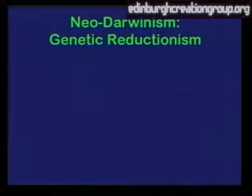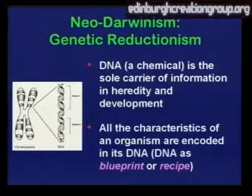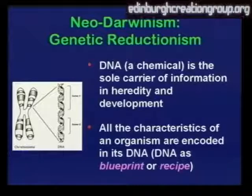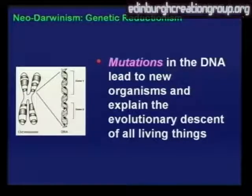Darwinism is based on what I'd call a genetic reductionist model of organisms — the assumption that DNA is the sole carrier of information in heredity and development, and that all the characters of an organism are encoded in its DNA as some kind of blueprint or recipe. 'DNA is God and RNA is his prophet' is how my biology lecturer at Birmingham University put it — though he didn't actually believe it. The idea is that mutations in the DNA, base changes at root, lead to new organisms and explain the evolutionary descent of all living things.